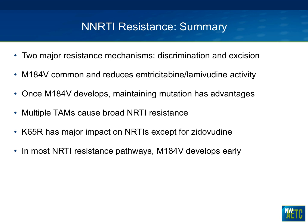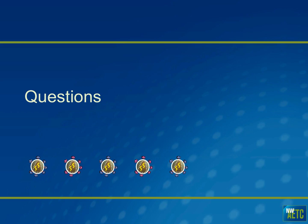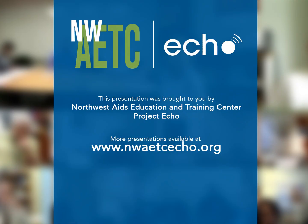In summary: there are two major resistance mechanisms — the discrimination pathway and the excision pathway. M184V is an extremely common mutation reducing activity of emtricitabine and lamivudine; once it develops, maintaining lamivudine or emtricitabine has significant advantages. Multiple TAMs cause broad NRTI resistance, leaving little utility in the class. K65R impacts multiple NRTIs except zidovudine. In most resistance pathways, assume M184V developed first before the other mutations mentioned.